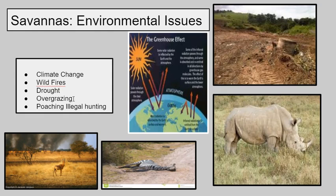Moving on to our last environmental issue for the Savannah biome — poaching and illegal hunting. Animals are poached and hunted for different reasons. Here we have a zebra, which is most likely hunted for its pelt and coat. Other animals hunted for their pelts include lions and cheetahs, and these animals are also hunted as trophies.